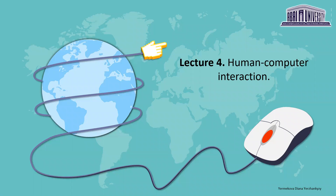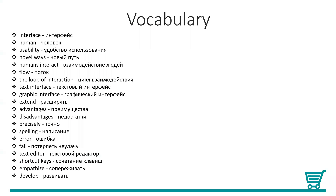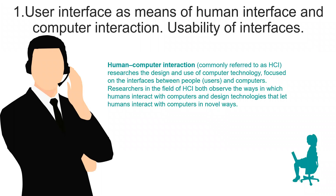Hi guys, I hope you're all doing fine. This is lecture number four about human-computer interaction. The agenda for today: first, user interfaces as means of human-computer interaction; second, types of interfaces; and third, the development stage of the interface. There's also vocabulary which you need to learn by heart at home, as usual.